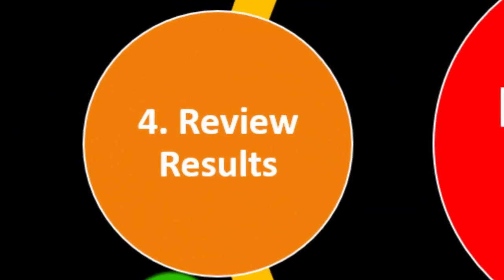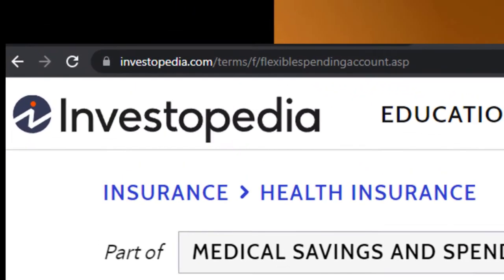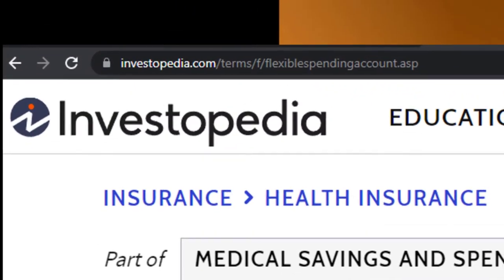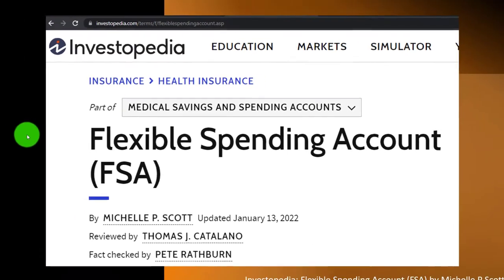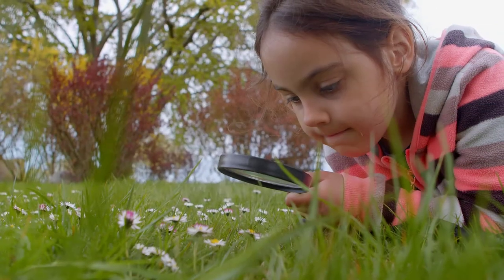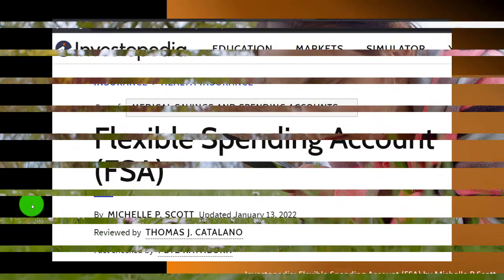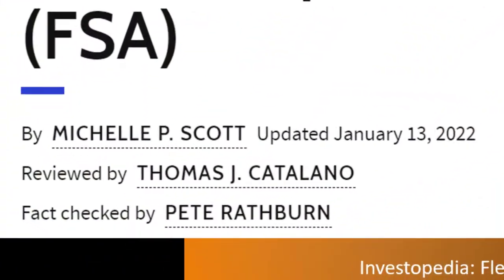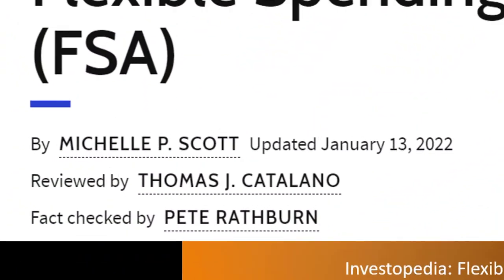Repeat the process periodically. Most of this information can be found at Investopedia — Flexible Spending Account, FSA — which you can find online. Take a look at the references and resources and continue your research from there. This is by Michael P. Scott, updated January 13, 2022.